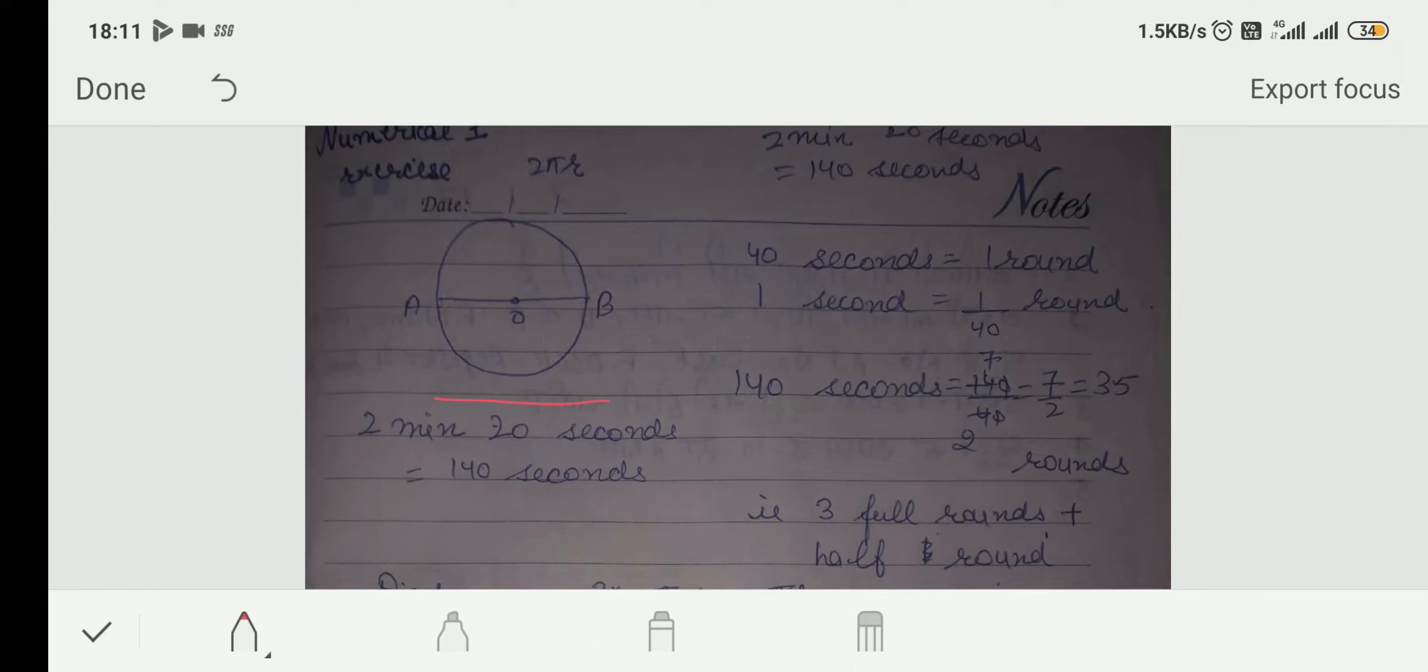Statement is same that you have to calculate distance and displacement at the end of 2 minutes 20 seconds. So, first you convert time in seconds. In mostly numericals, you have to use time in seconds. Again, you will use unitary method.